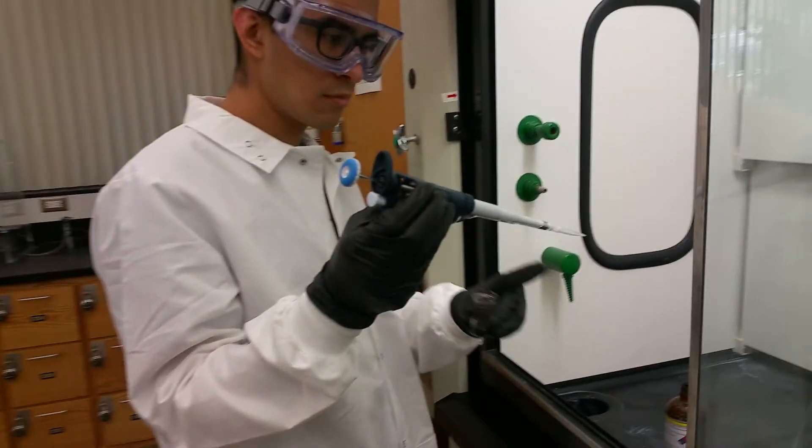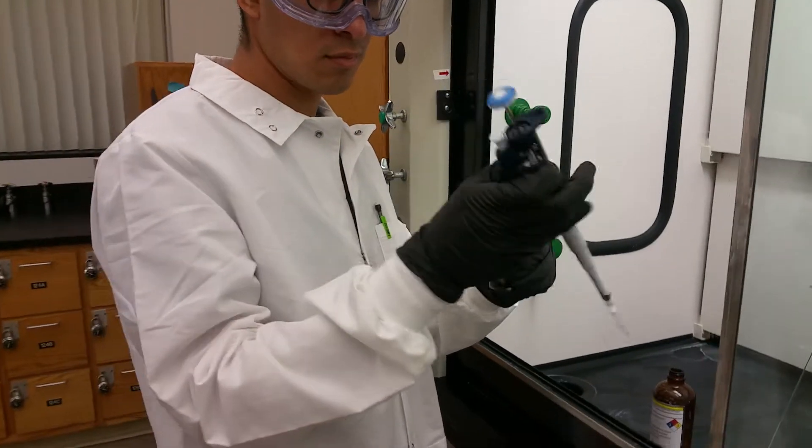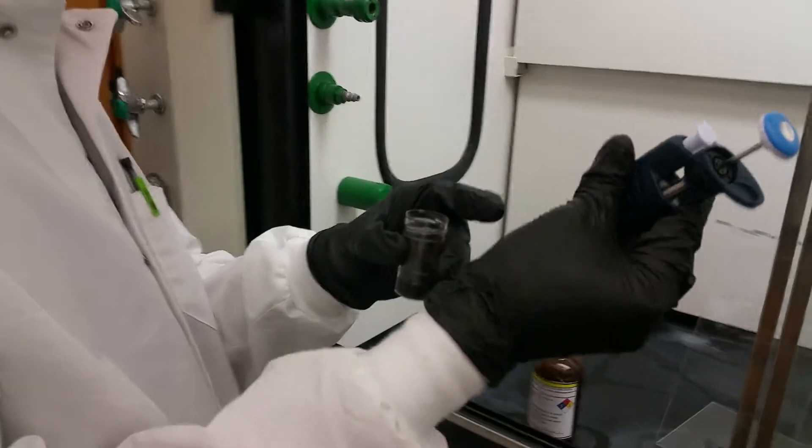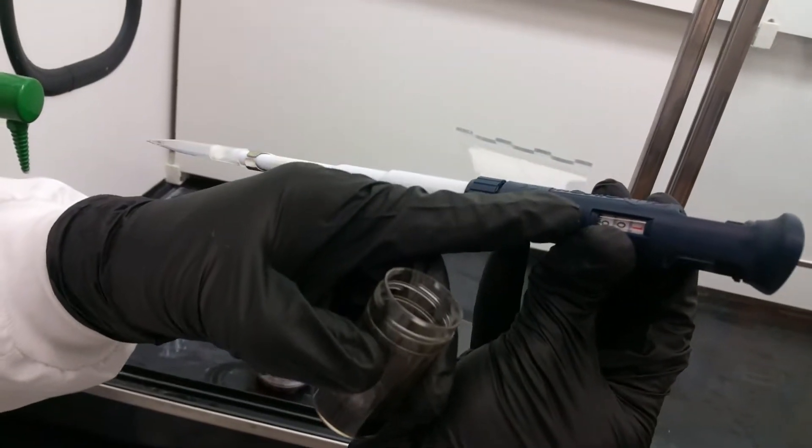Attach a pipette tip to the bottom of the micropipetter. Already attached. Check the volume adjustment on the handle to make sure it's set to the proper volume. Checked. Correct volume.